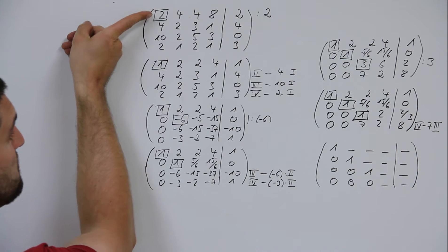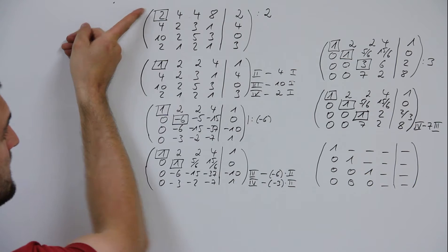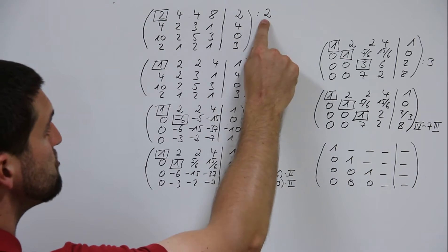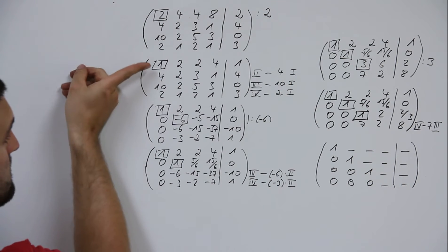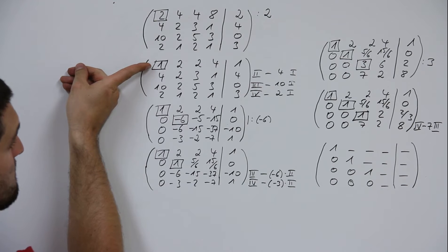Mark the pivot element, the so-called pivot element in the corner here. Divide the whole first line through the pivot element. The number is now 1 in the pivot element.